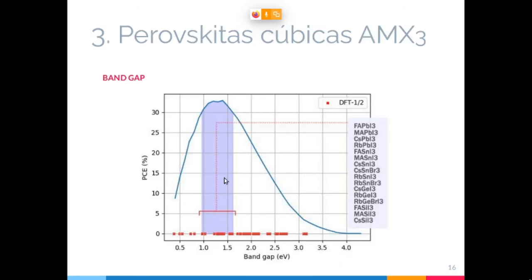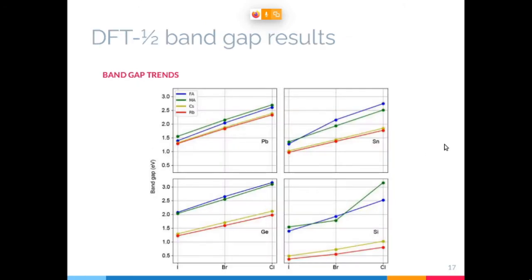And here I show a graph of the maximum conversion efficiency of a single junction solar cell. This is a theoretical result as a function of the band gap of the material, and I placed all the band gaps that we found here as red dots. I found 16 materials in this range that represent an efficiency higher than 30 percent. So we have 16 of these materials among those we studied, and many of these haven't been studied in detail neither experimentally nor theoretically, so they are good research paths for the future.